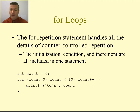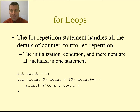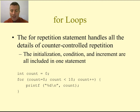With a for loop, we have all of the details of the counter-controlled repetition embedded in the statement at the top of the loop — the for statement. The initialization, the condition, and the increment are all included in one statement.